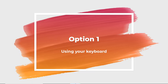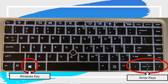Option one uses your keyboard to split your screen into two separate windows. Find your Windows key and arrow keys on your keyboard. The Windows key is in the lower row between the function key and the alt key. Your arrow keys are on the right-hand side, and we'll use the left and right arrows to lock screens side by side.